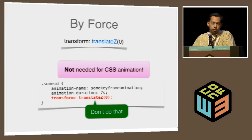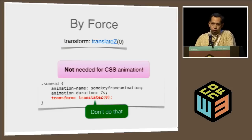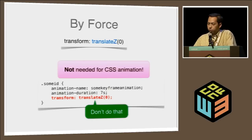The typical way to force layers is using Translate Z or Translate3D. However, you don't necessarily need to do this if you're already using CSS animation or CSS transition — so Translate Z in that context is redundant. A modern browser will try to put animated elements as layers in the compositing process automatically.